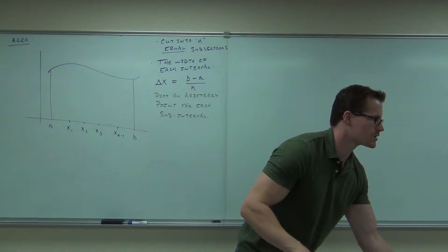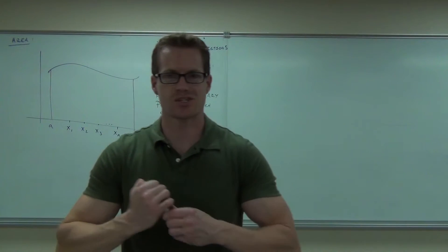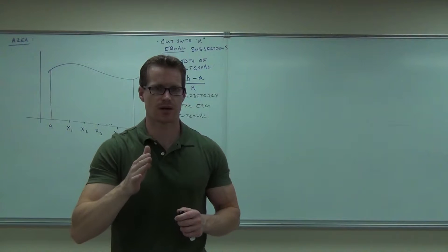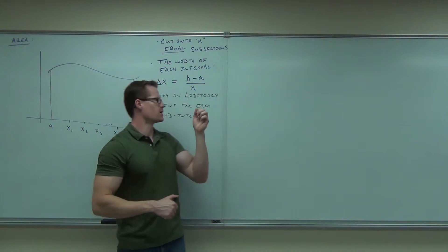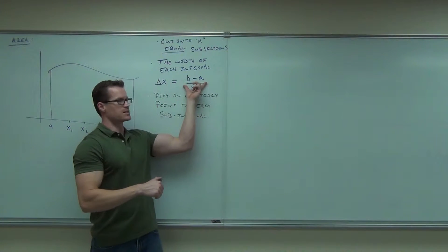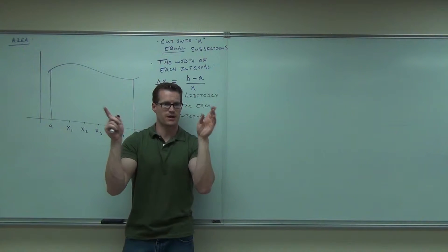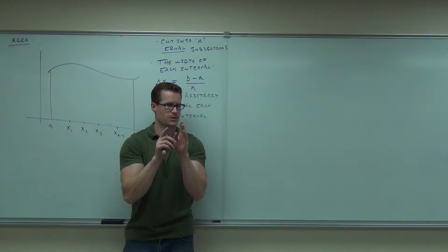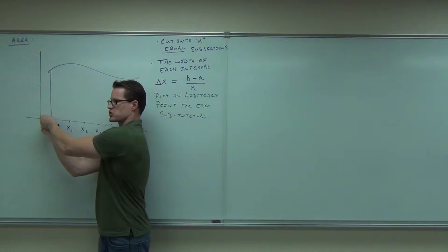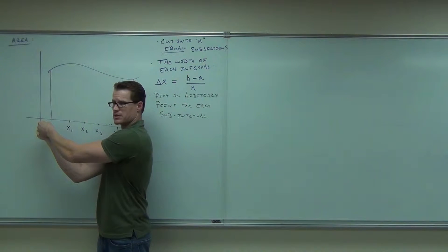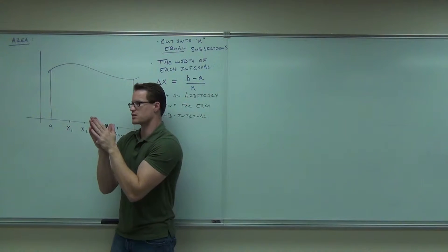Pick some random point in between there. I'm going to explain to you why it doesn't have to be a specific point — why it could be a random point. Because as soon as I start stacking an infinite number of rectangles in there, as soon as I let n go to infinity, this distance becomes zero. n goes to infinity, number of rectangles goes to infinity, the distance between them — a finite value divided by infinity — goes to zero. So any point I pick is going to be really just squished in there.